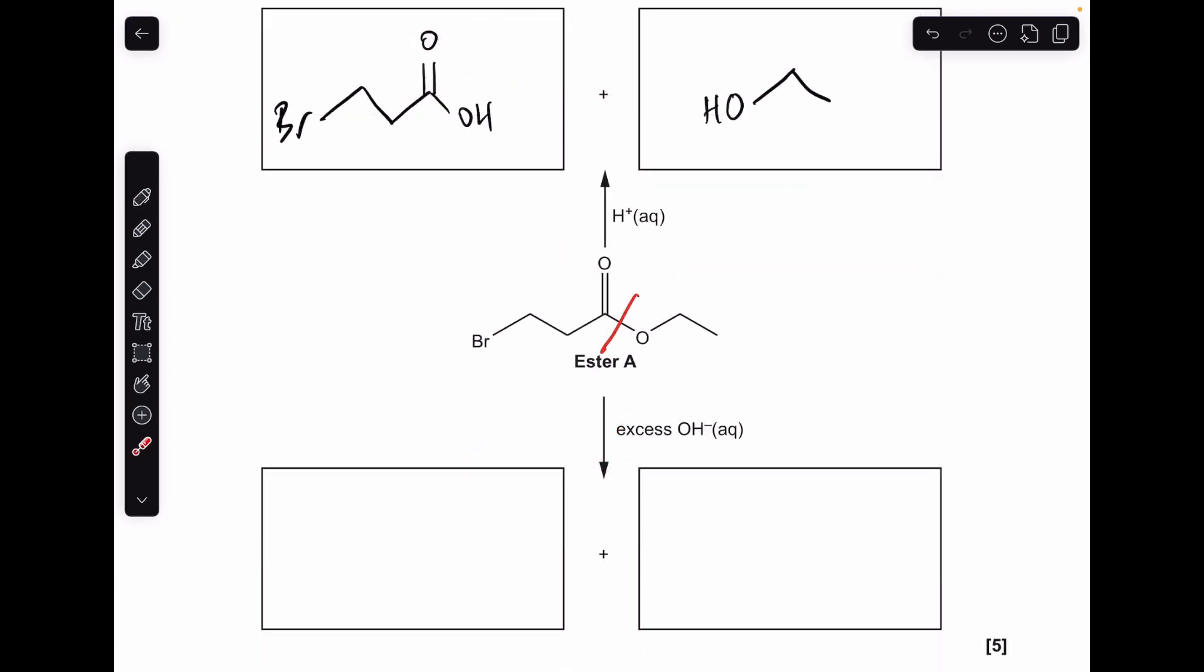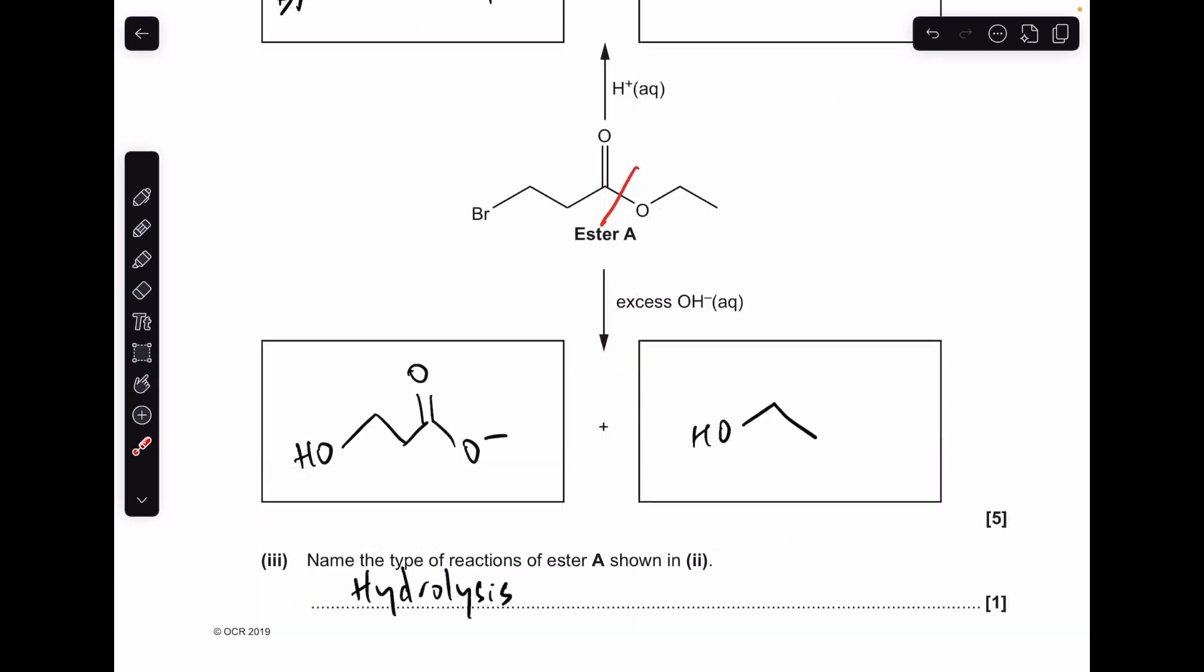Moving on to the alkaline hydrolysis, it's the same bond that breaks. We're going to get an alcohol again, so we're just going to make that again. But this time we're going to get a carboxylate ion here. We've got to be really careful because the hydroxide can also substitute with that bromine. So there's your products on the screen now, and well done if you remembered about that. The type of reaction that's taking place is hydrolysis.